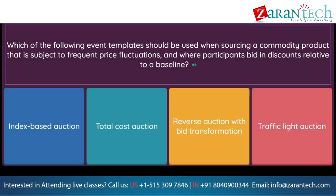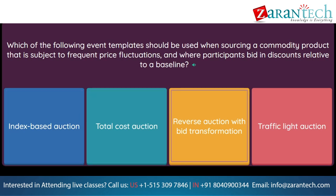Question: Which of the following event templates should be used when sourcing a commodity product that is subject to frequent price fluctuations, and where participants bid in discounts relative to a baseline? Option 1: index based auction. Option 2: total cost auction. Option 3: reverse auction with bid transformation. Option 4: traffic light auction.